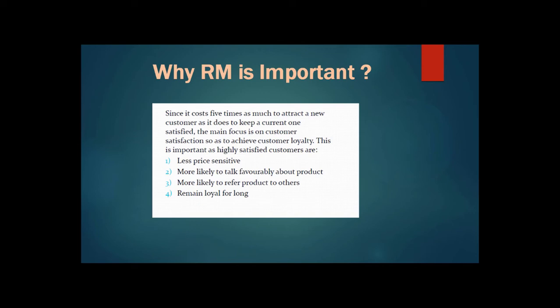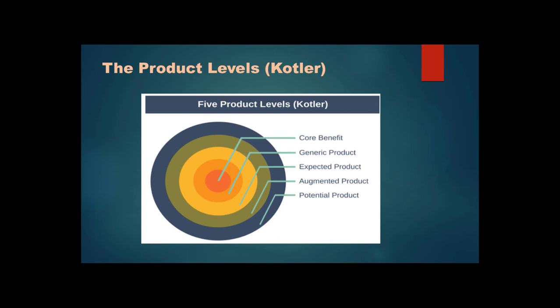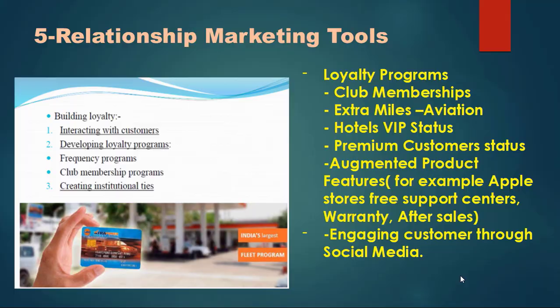If you remember Kotler's product levels, the basic functions of the product are the core benefit. In transactional marketing you may focus on the core benefit and the generic product, but in relationship marketing you are focusing on the augmented level, which includes improved customer service, warranty, and customer relationship management.